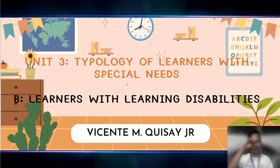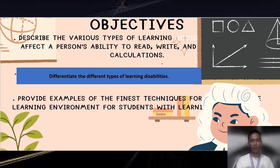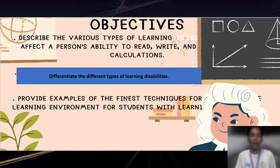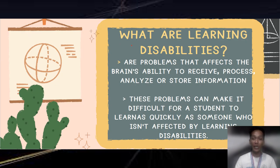I am one of the reporters of Unit 3, which is the typology of learners with special needs, and I am being tasked to report about the learners with learning disabilities. The objectives of this presentation are: first, to describe the various types of learning that affect a person's ability to read, write, and calculate; next, to differentiate the different types of learning disabilities; and to provide examples of the finest techniques of learning environments for students with learning disabilities.